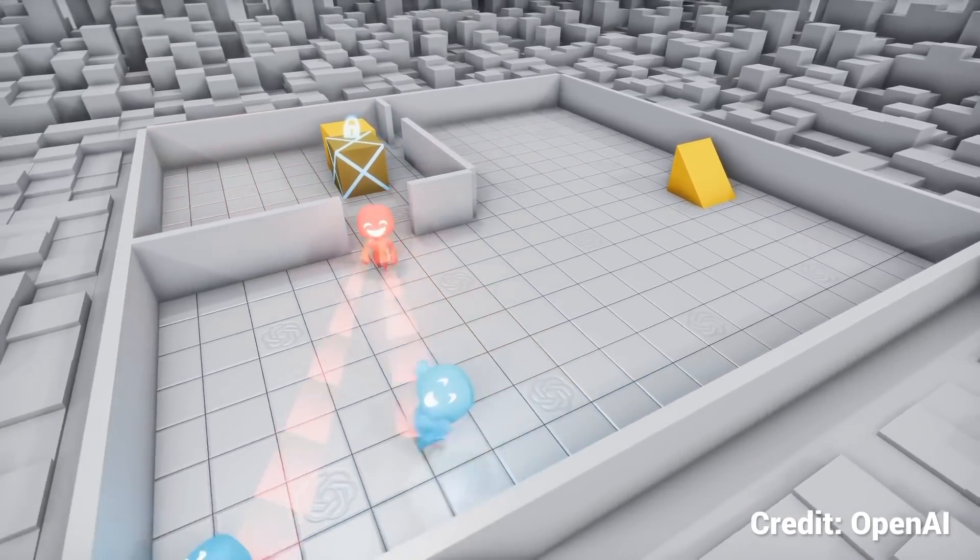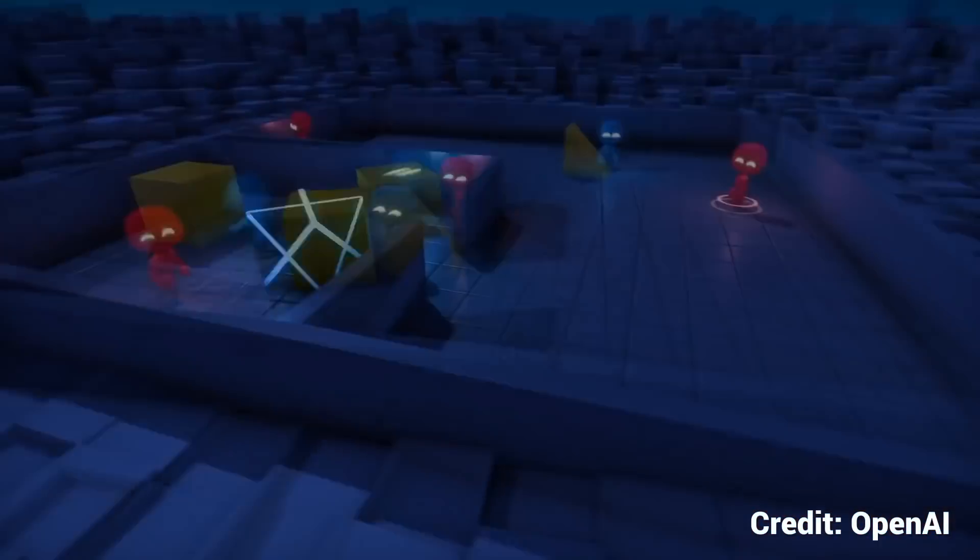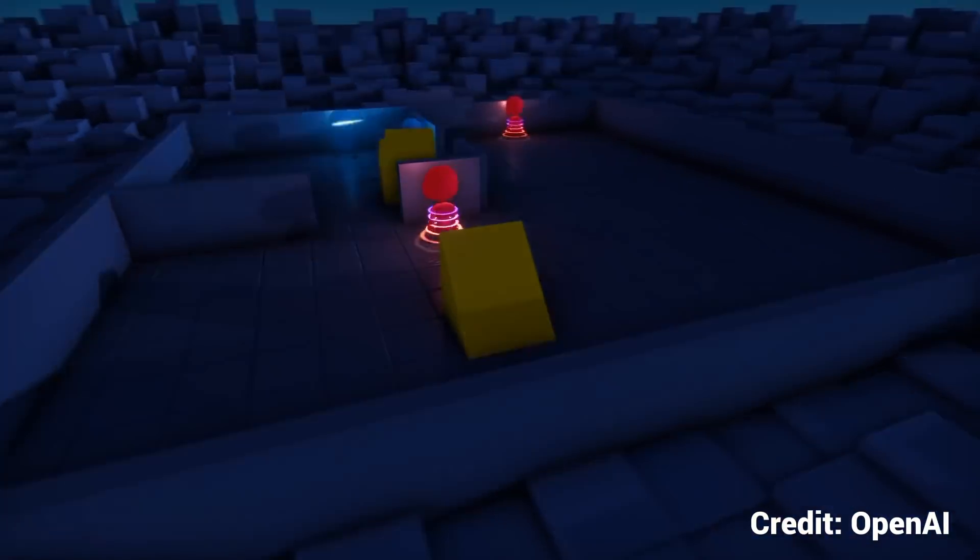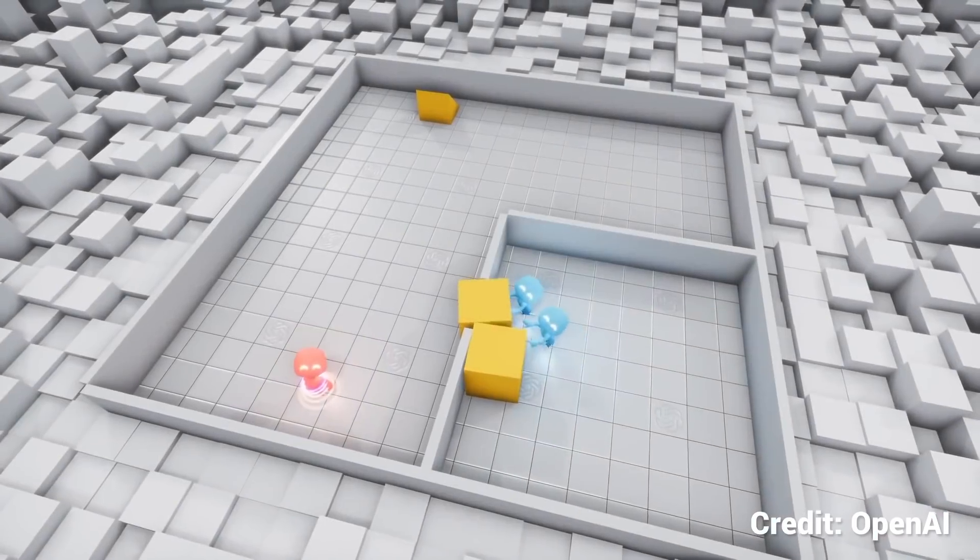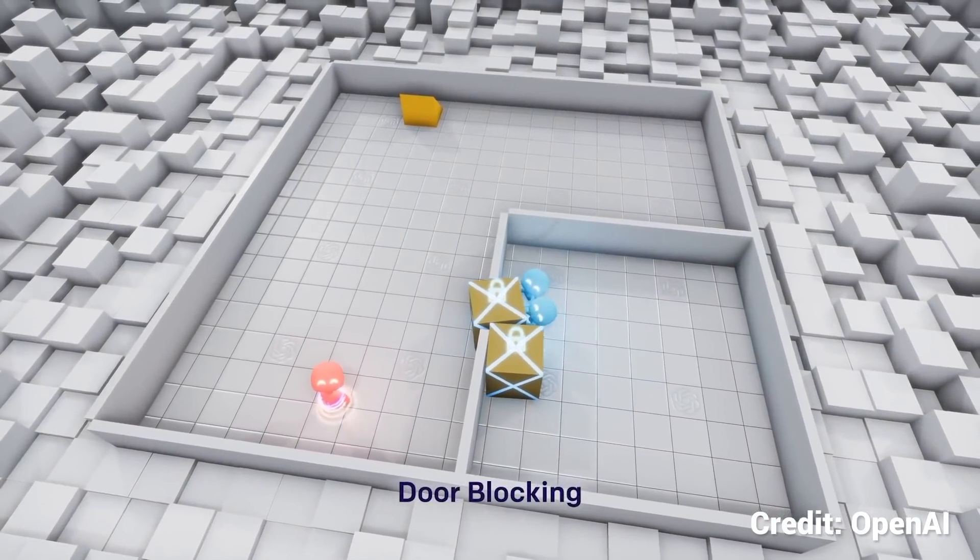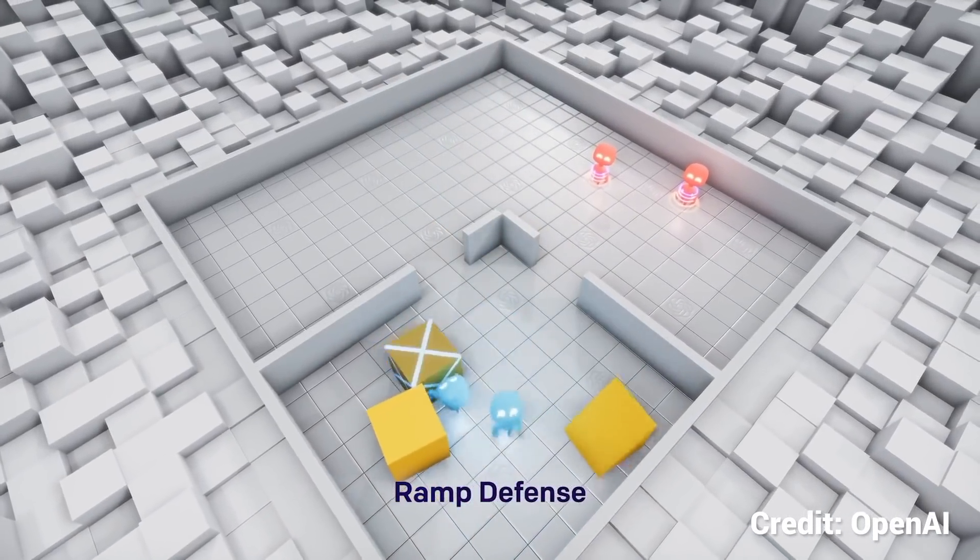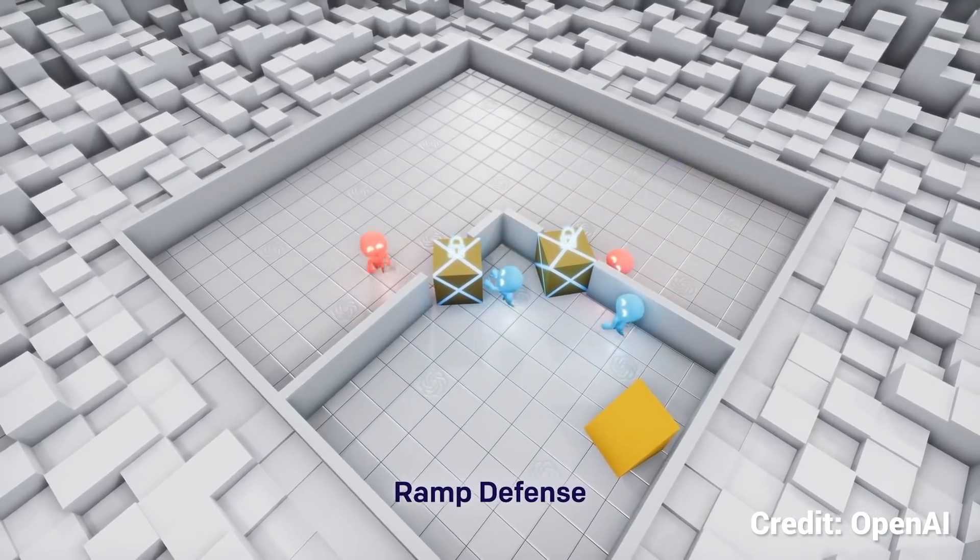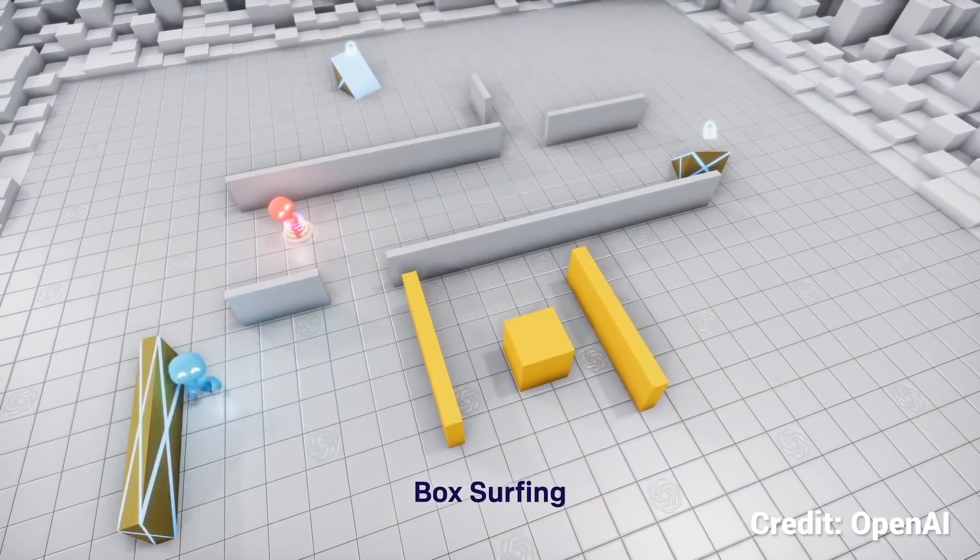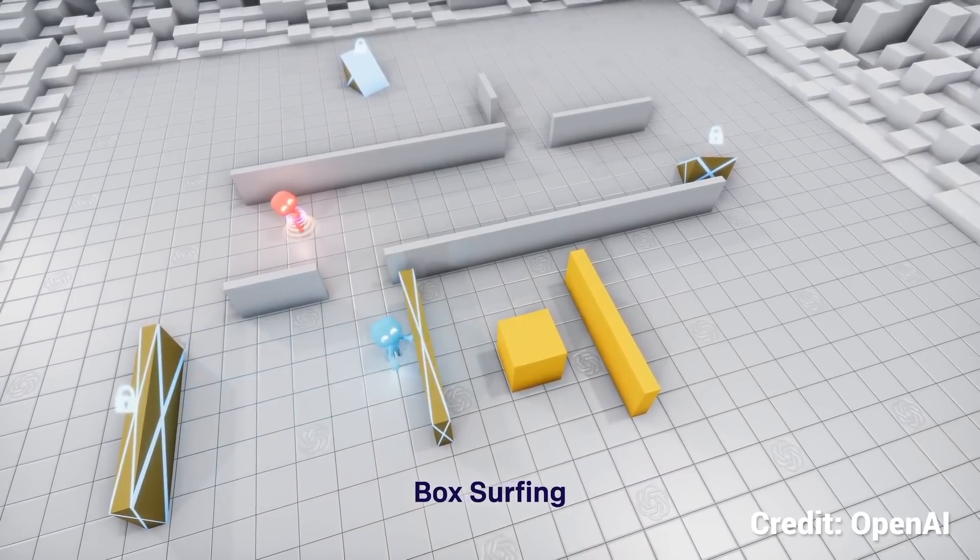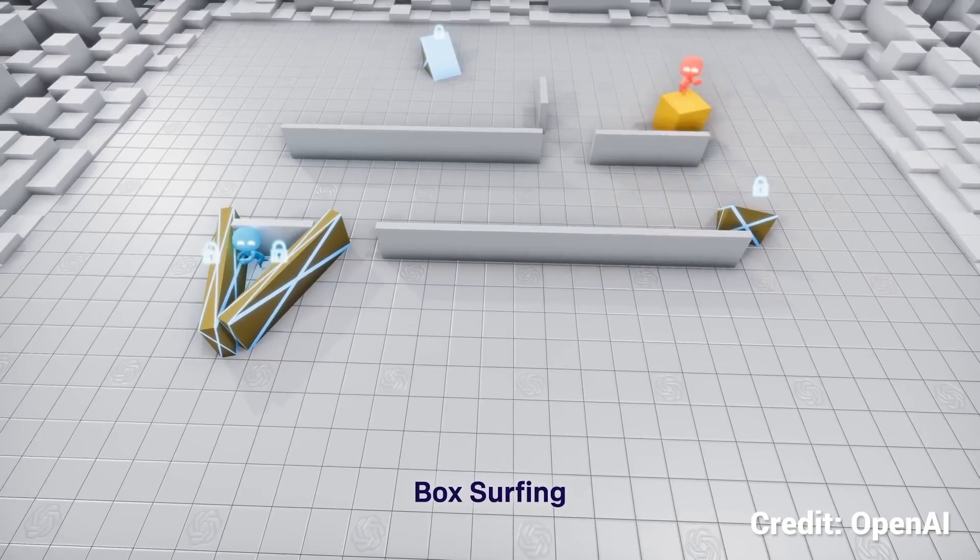AI learns from experience, calculating the likely outcomes of many possible choices. After training in millions of rounds of hide-and-seek, the hiders find solutions using rudimentary tools to their advantage. After many millions of rounds, the hiders learn to take away the primary tool seekers have at their disposal. To prevent seekers from using the ramps, the hiders move them to the edge and lock them in place. The seekers discover they can jump on boxes and surf them to the hiders' shelter.